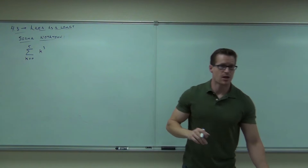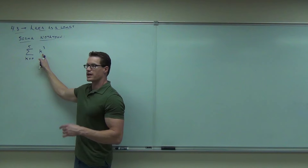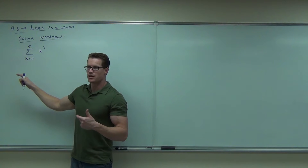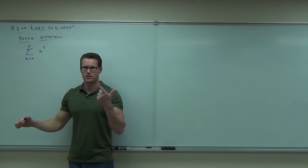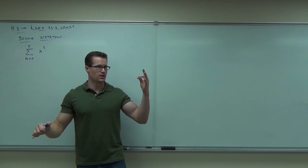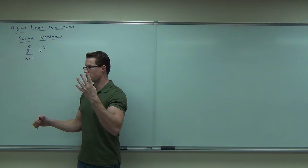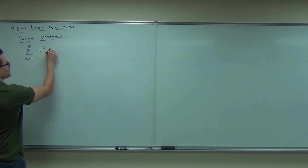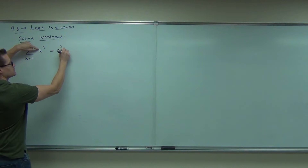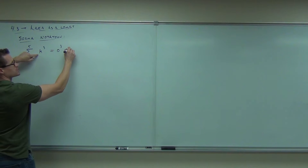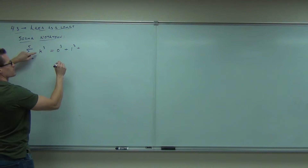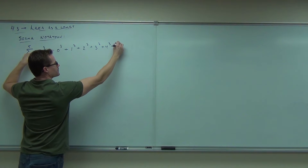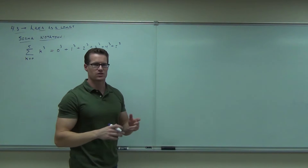Here's what sigma notation means: you let k go through all the integers — the whole numbers — between and including the start and end values. So you start at k equals 0, then go 1, 2, 3, 4, 5, and you add all of that up. So sigma notation is a sum: you'd have 0 cubed, plus 1 cubed, plus 2 cubed, plus 3 cubed, plus 4 cubed, plus 5 cubed. That's what sigma notation actually stands for.